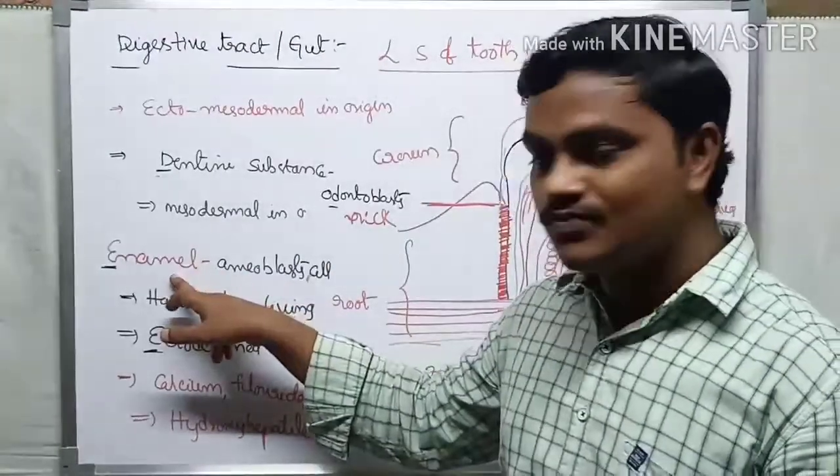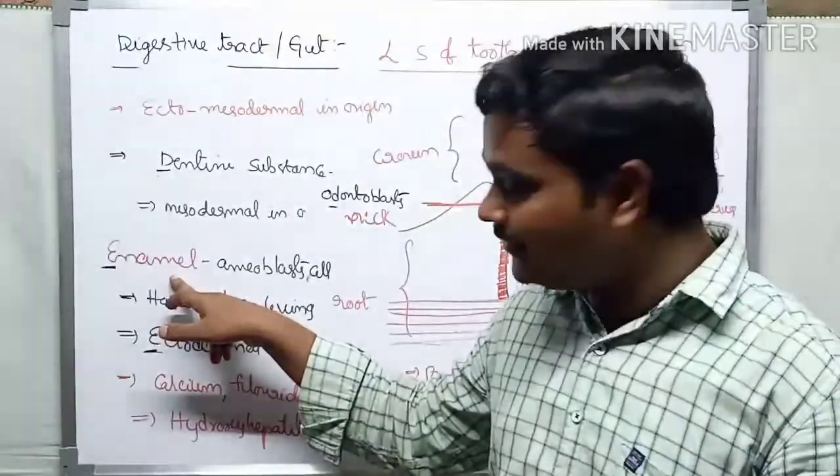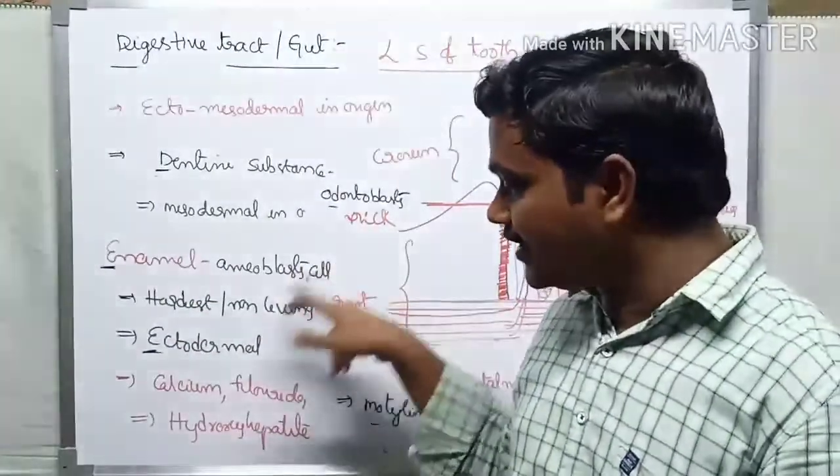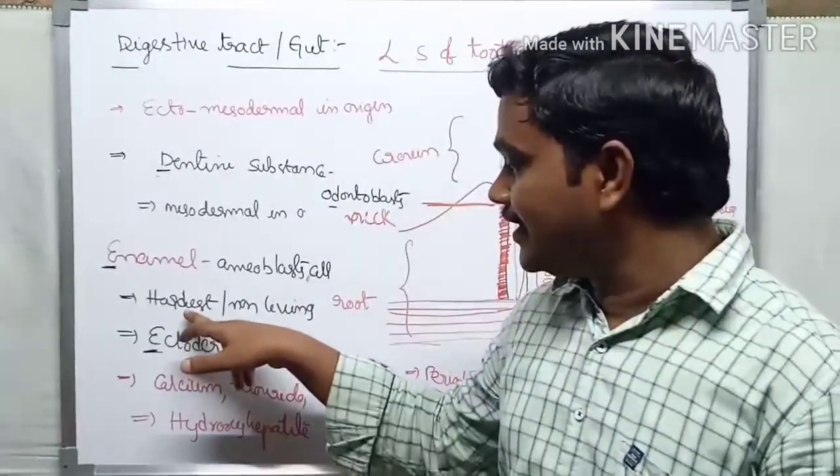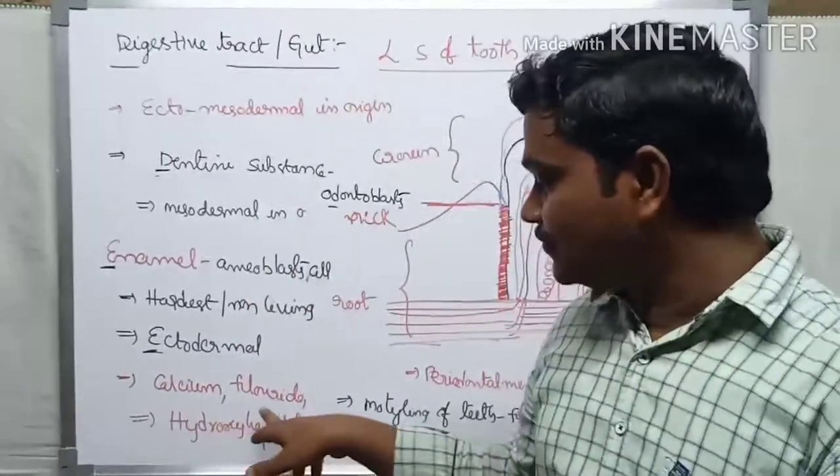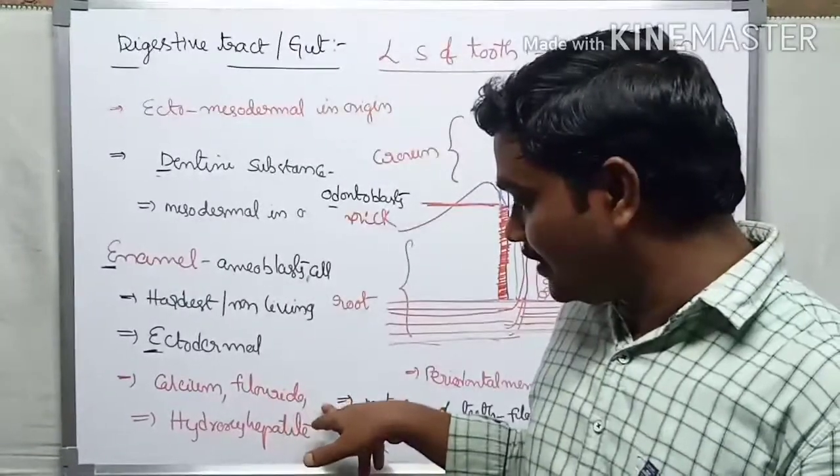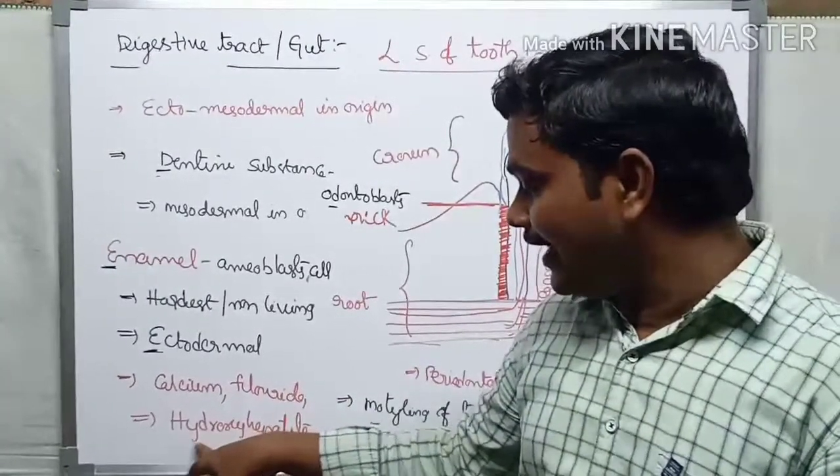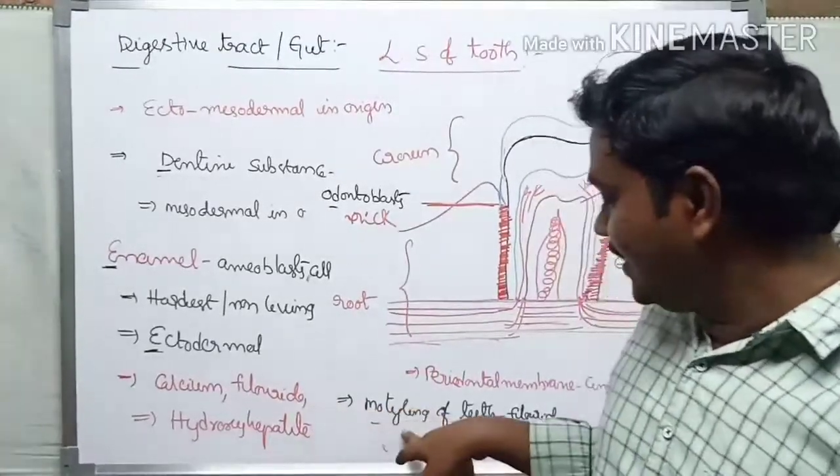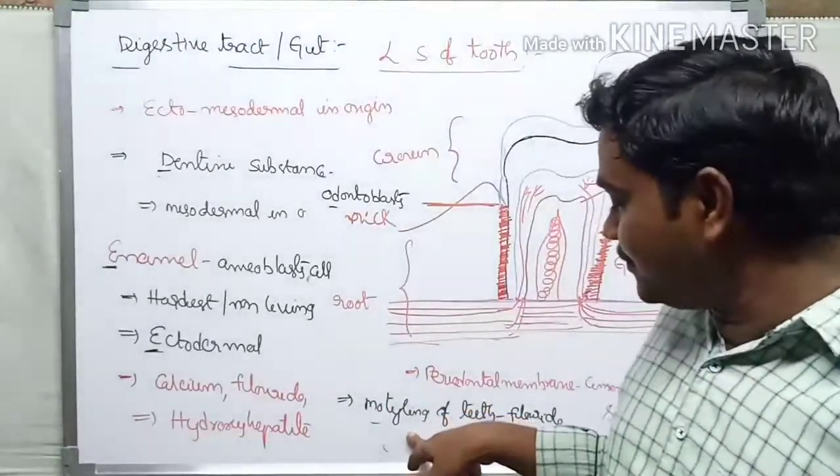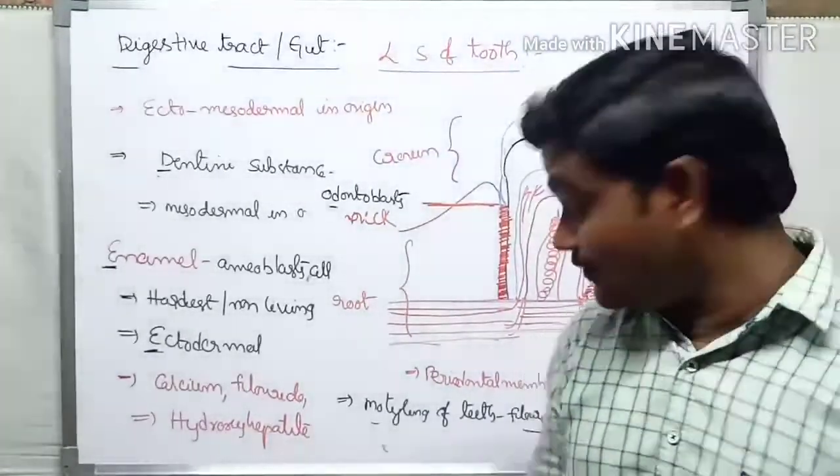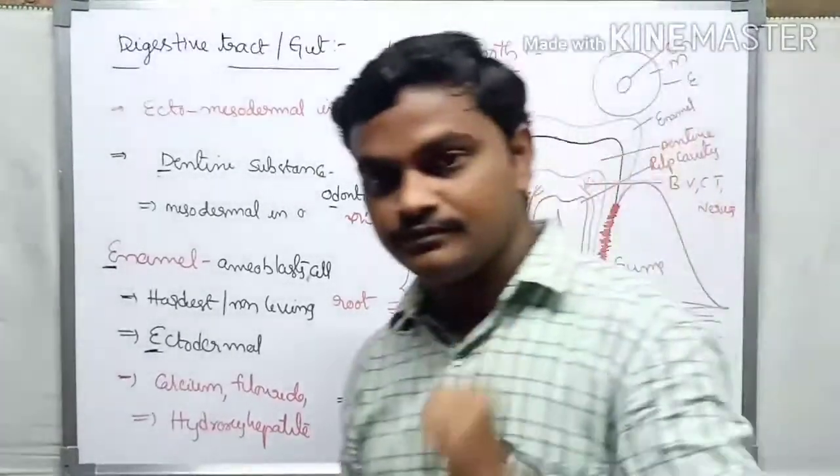Then enamel is one more substance which is the hardest non-living substance, secreted by ameloblast cells which are ectodermal in origin. So the hardest substance, non-living. Teeth are formed by calcium fluoride and other minerals. Chemically, it's known as hydroxyapatite. If in case fluoride exceeds, teeth become yellow.